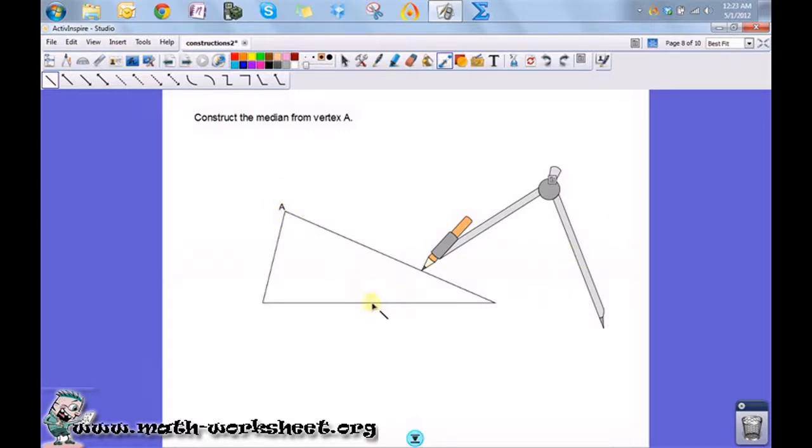So what I want to do is find the midpoint of this side first, and it really is going to use the same construction as finding a perpendicular bisector. So I'm essentially going to find the perpendicular bisector of this side here first.